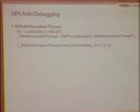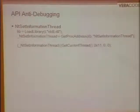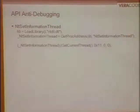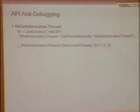NtSetInformationThread: instead of querying a process, we make a call that modifies thread information. Again dynamically loaded with GetProcAddress and LoadLibrary. The critical parameter is the thread information class value of 0x11 — this detaches our current thread from any attached debugger. One call and the debugger gets detached. We use GetCurrentThread to tell the call that we want to target ourselves.